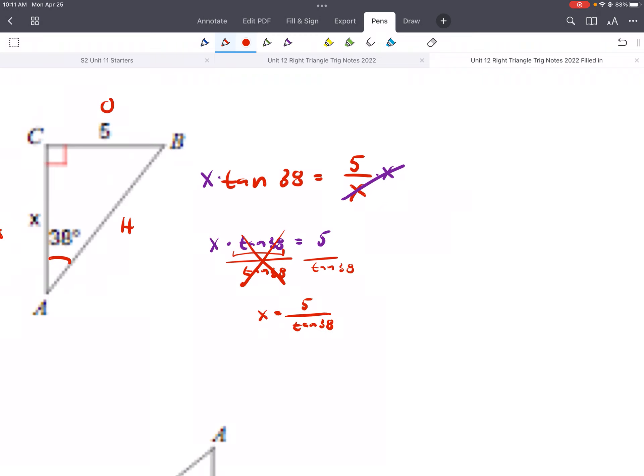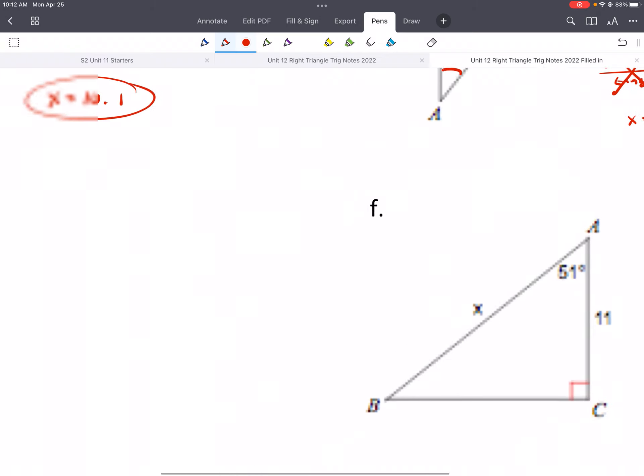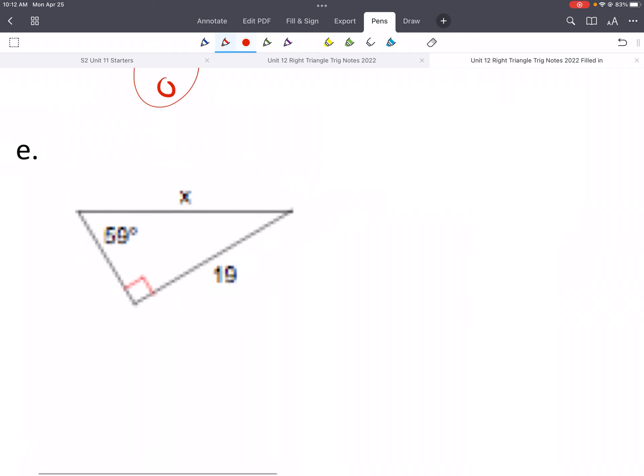So we'll type that into our calculator. Again, you'll probably have it something like this, like 5 divided by tangent of 38, or if your calculator uses that division symbol. But same sort of thing. So 5 divided by tan, 38. And I end up getting 6.4 if I round to the tenths place. So same thing for the first step. I'm going to multiply both sides by that denominator, but then we have to do one more step to get X by itself.